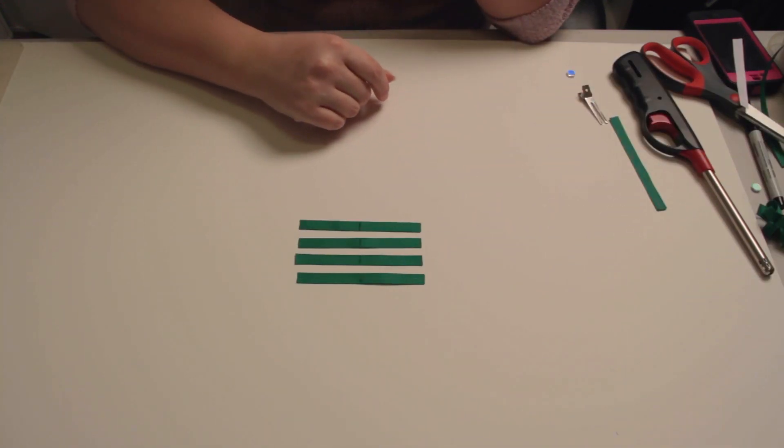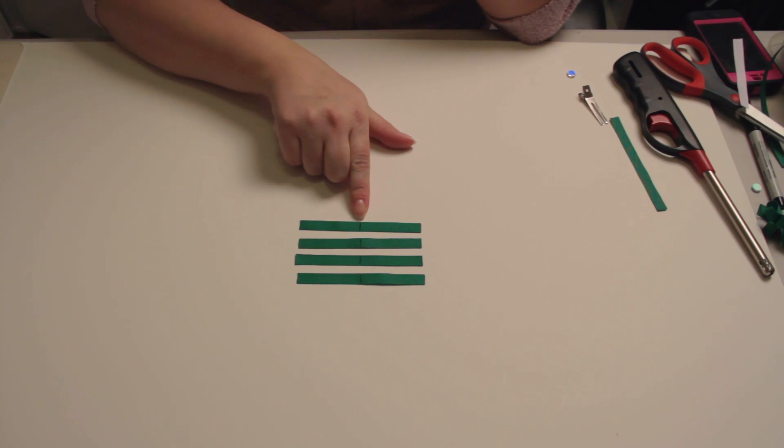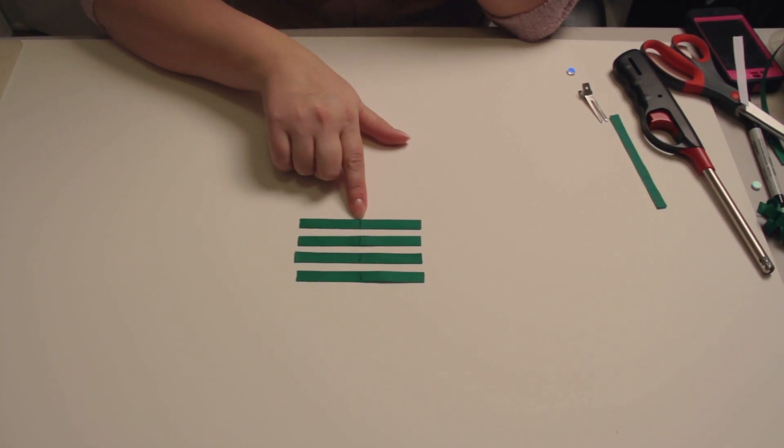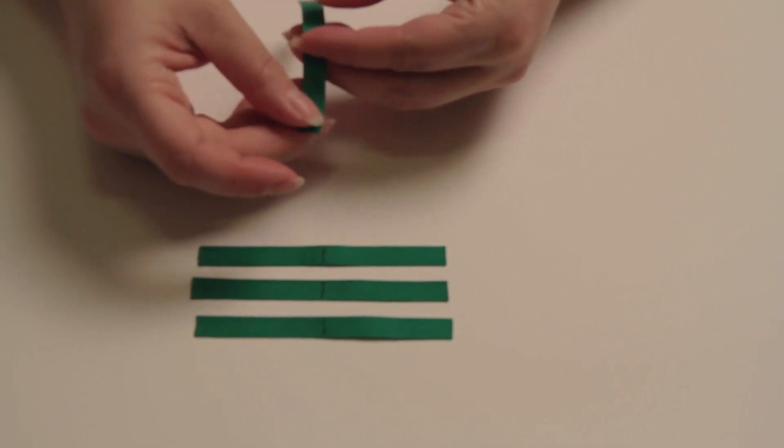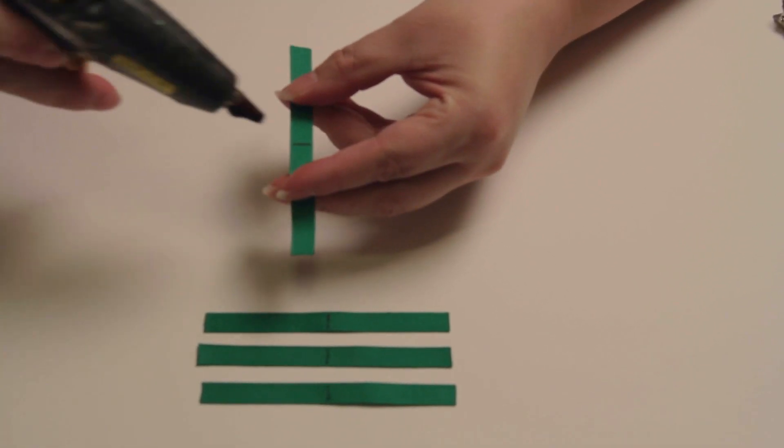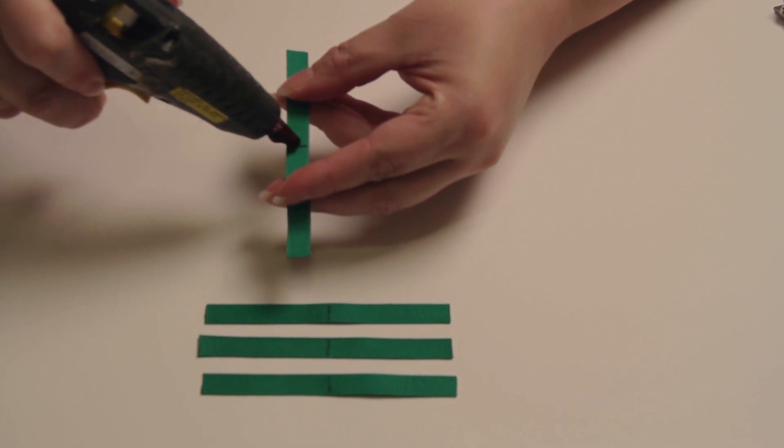The first thing you want to do after cutting your ribbon is marking the middle of the ribbon, which in this case would be the two inch mark. Then what you're going to do is take each piece of ribbon and on that center mark you're going to put just a tiny dot of glue.